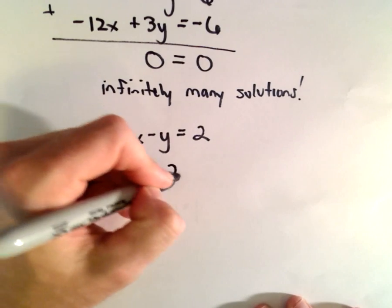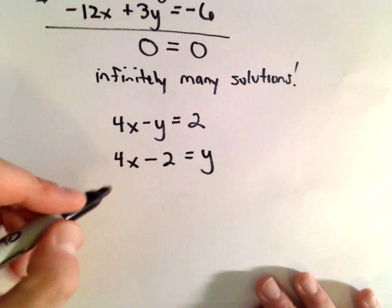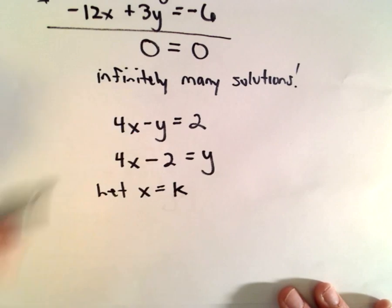So I'm going to subtract the 2 to the left side, I'm going to add y over, and now the idea is we can say let's let x equals some constant k.